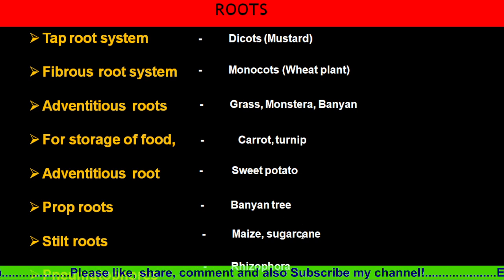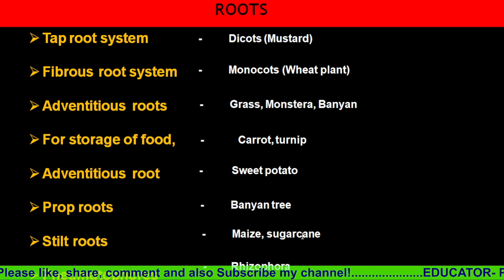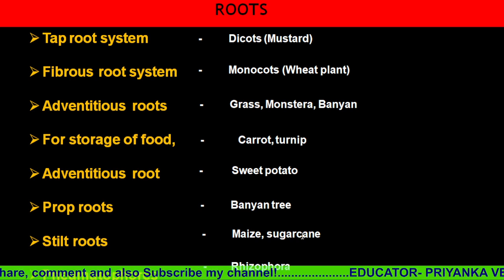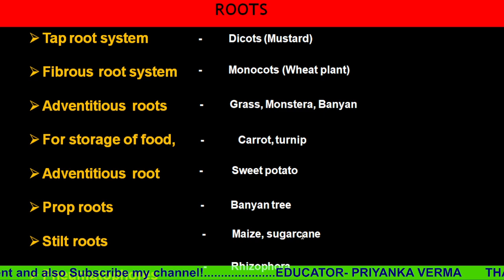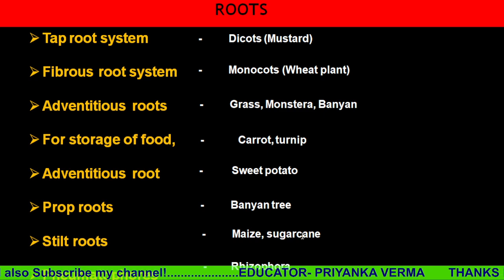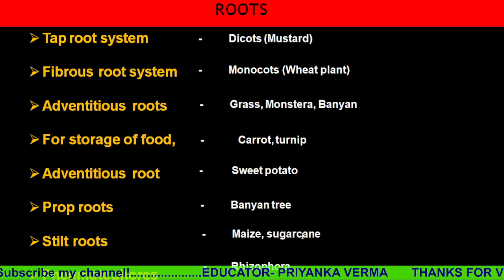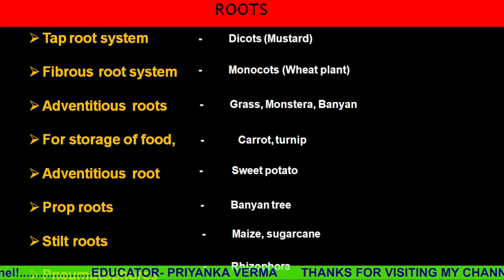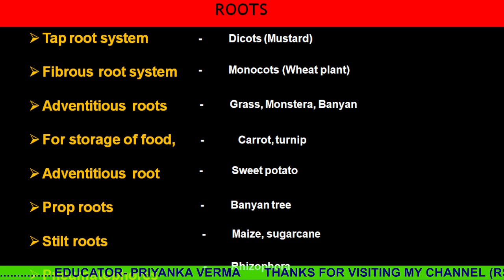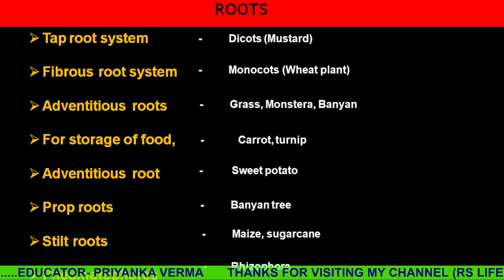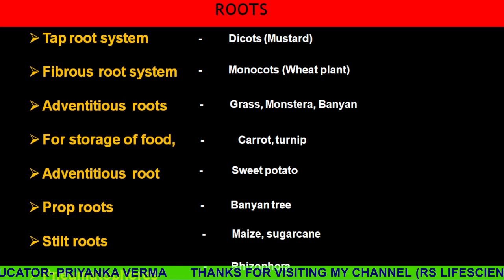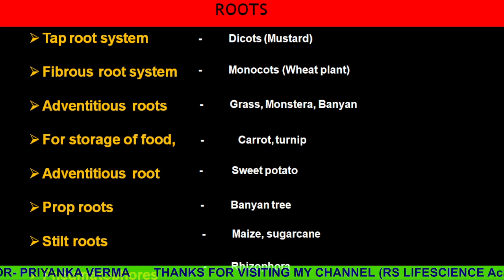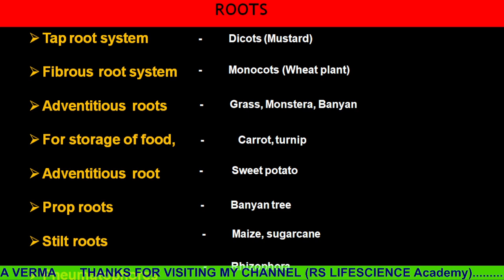Stilt roots, which you have seen in maize or sugarcane, hold the plant in adverse conditions, keeping it standing straight. Pneumatophores are found in Rhizophora and are used for respiration. Because this plant grows in marshy areas, the roots grow out above the ground for gaseous exchange.